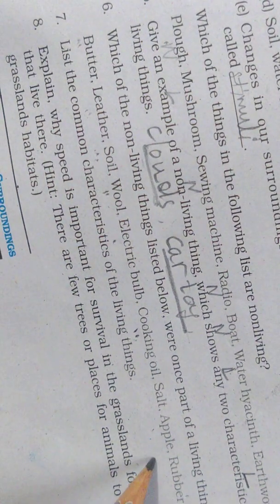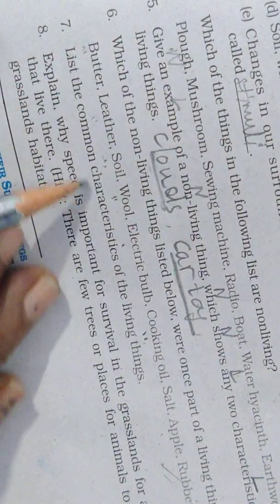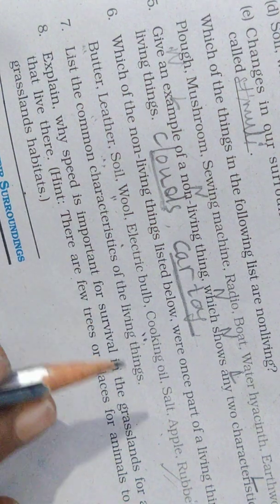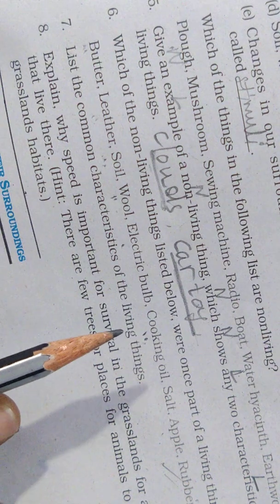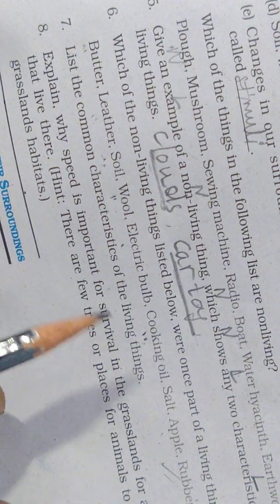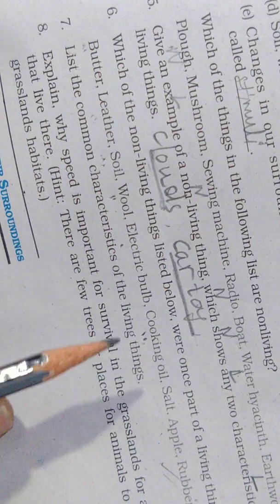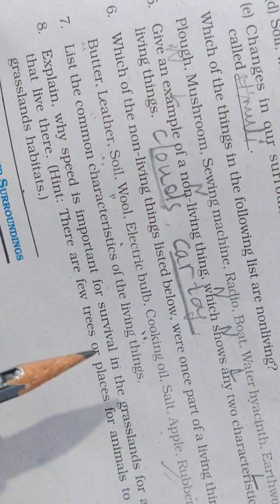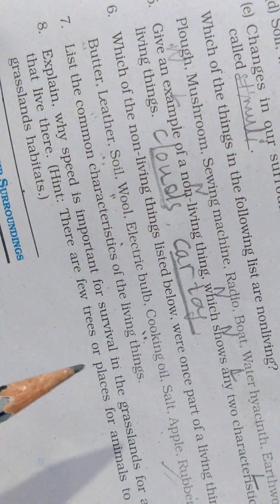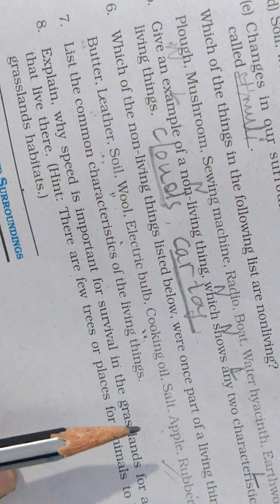List the common characteristics of living things. They reproduce. They grow. They do respiration. They move. They respond to stimuli. So these are the common characteristics of living organisms.